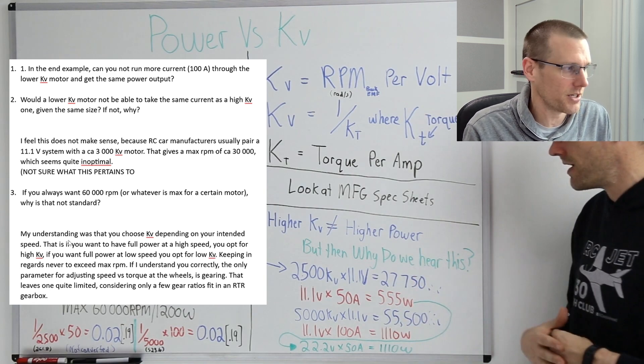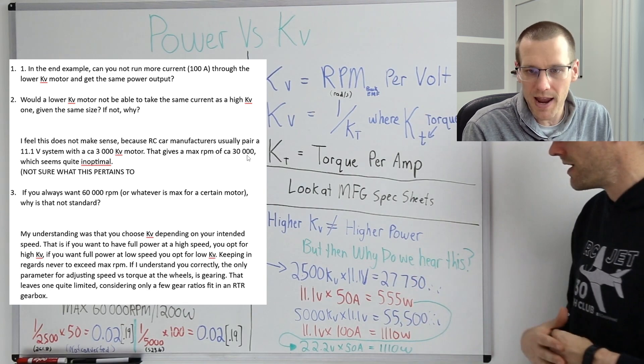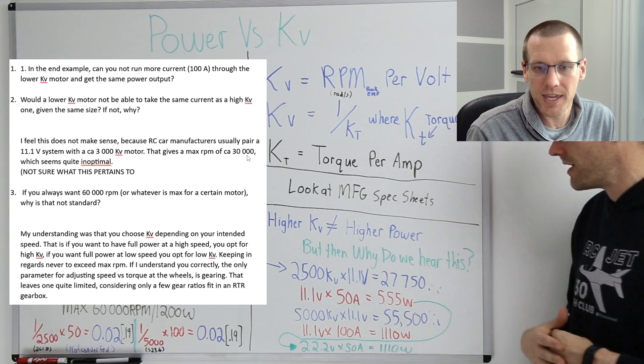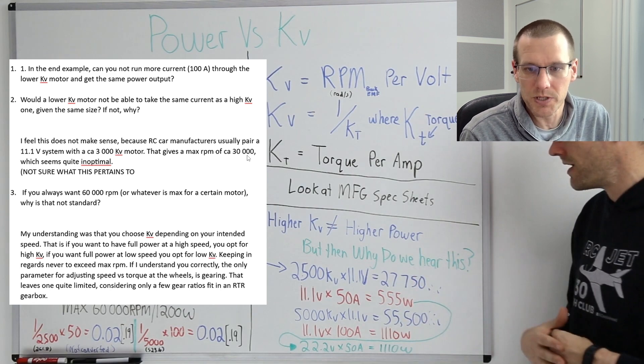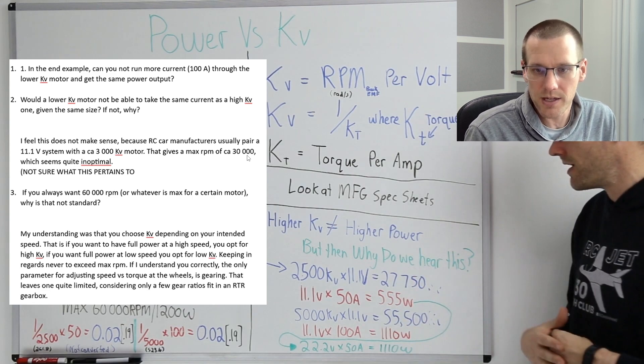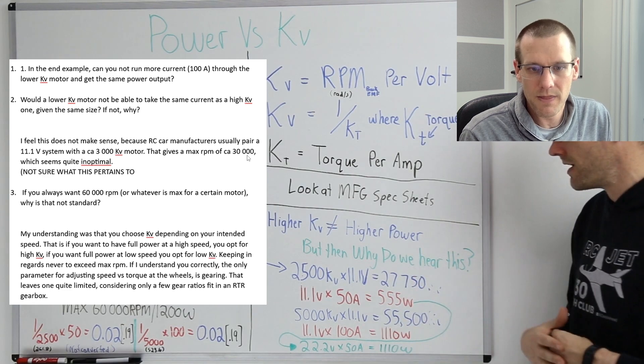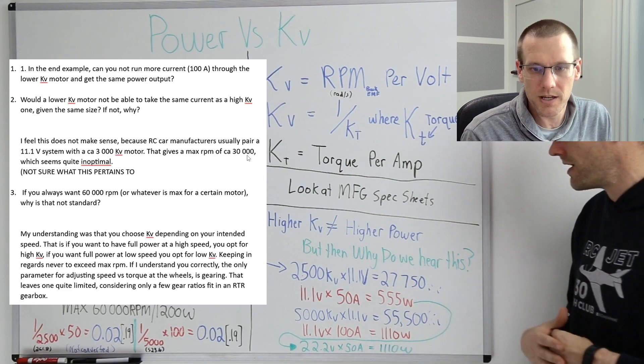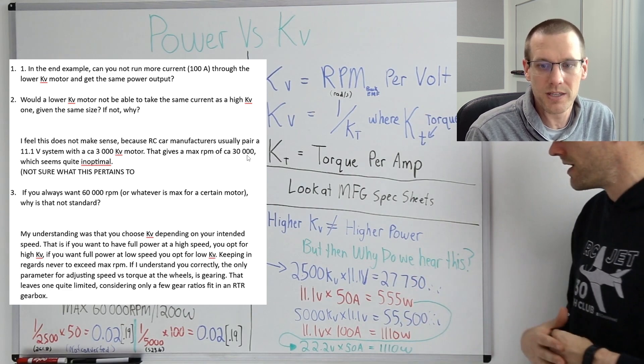So now let's take a look at the bottom section here. My understanding was that you choose KV depending on your intended speed. That is, if you want to have full power at high speed, you opt for high KV. If you want full power at low speed, you opt for low KV, keeping in regards never to exceed the max RPM. If I understand you correctly, the only parameter for adjusting speed versus torque at the wheels is gearing. That leaves one quite limited considering only a few gear ratios fit in a ready to run gearbox.